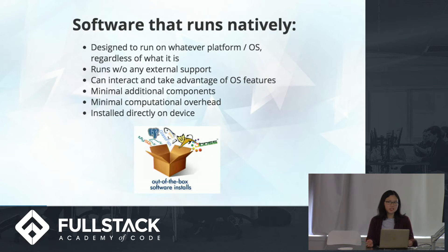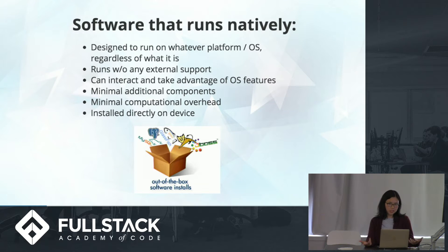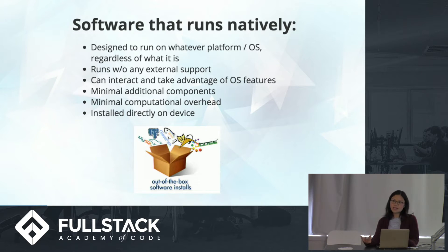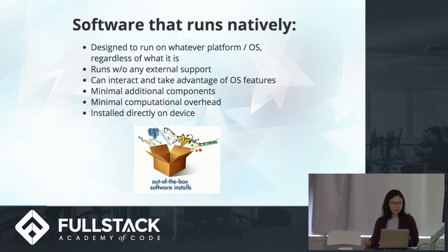Software that runs natively should be designed to run on whatever platform or operating system, regardless of what it is — Mac, OSX, Windows, or Linux. It should run without any external support and can interact with the native systems on your local environment, such as the task icons, dock icons, and menu bars. It should be lightweight with minimal computational overhead, and can be installed directly on the device out of the box.